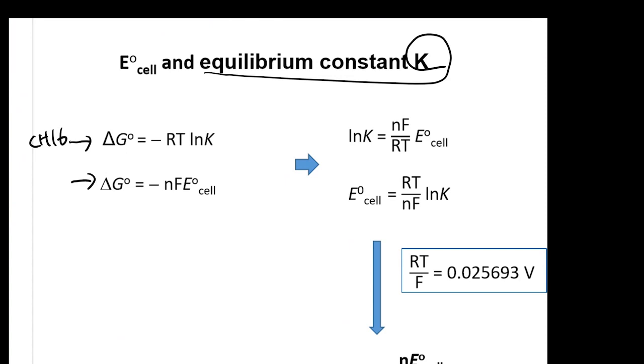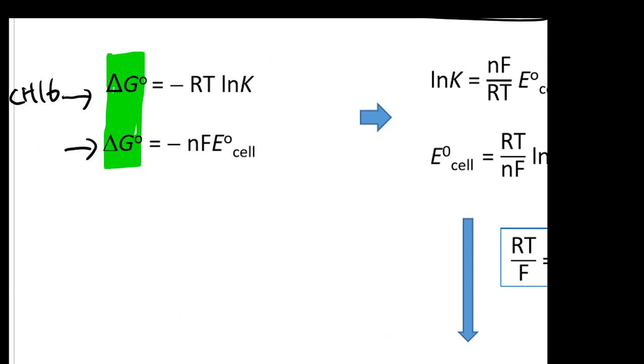On the previous slide, we know delta G° is equal to negative N times F times your E° cell. So once you know these two, the left hand side, they are both delta G°, right? Therefore, you know the things on the right need to be equal to each other. So once you know this, what you're saying is actually negative RT natural log K is going to be equal to negative NF E° cell.